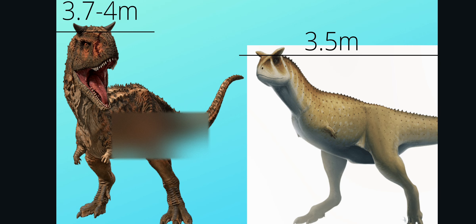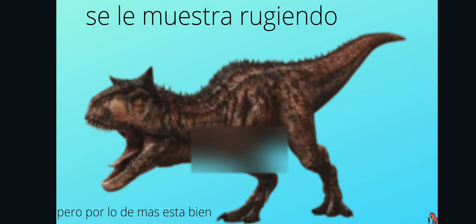Otra cosa grave es que tiene un tamaño más grande que el de la vida real. Un Carnotaurus mide unos 3.5 metros de altura y aquí se ve de unos 3.7 a unos 4 metros. También se le muestra rugiendo, cuando en realidad solo podían hacer ruidos fuertes. Algo que también noto es que sus osteodermos están muy saltados y muy filosos, cuando no tenían eso. Por lo demás está bien.